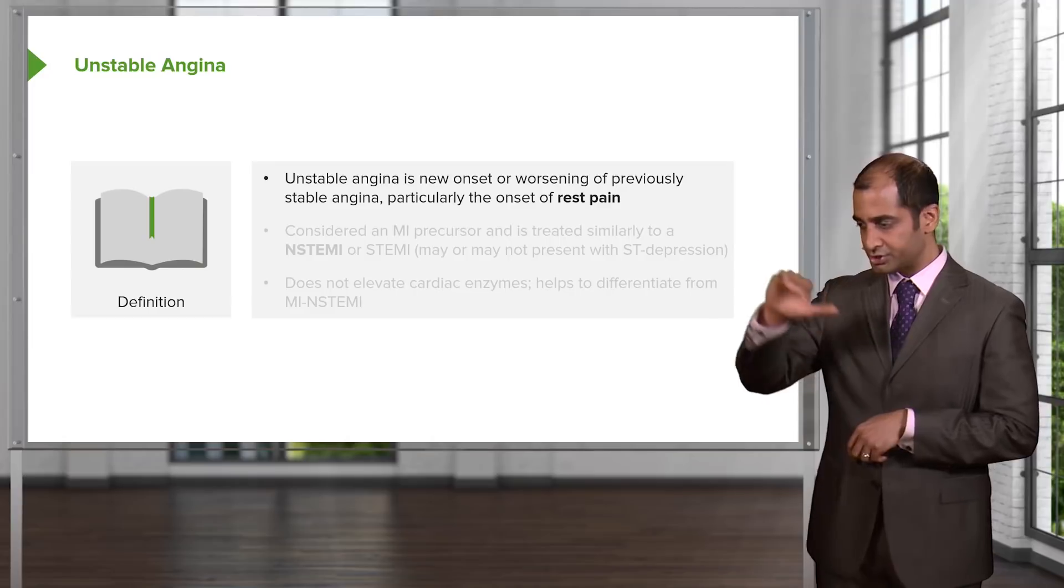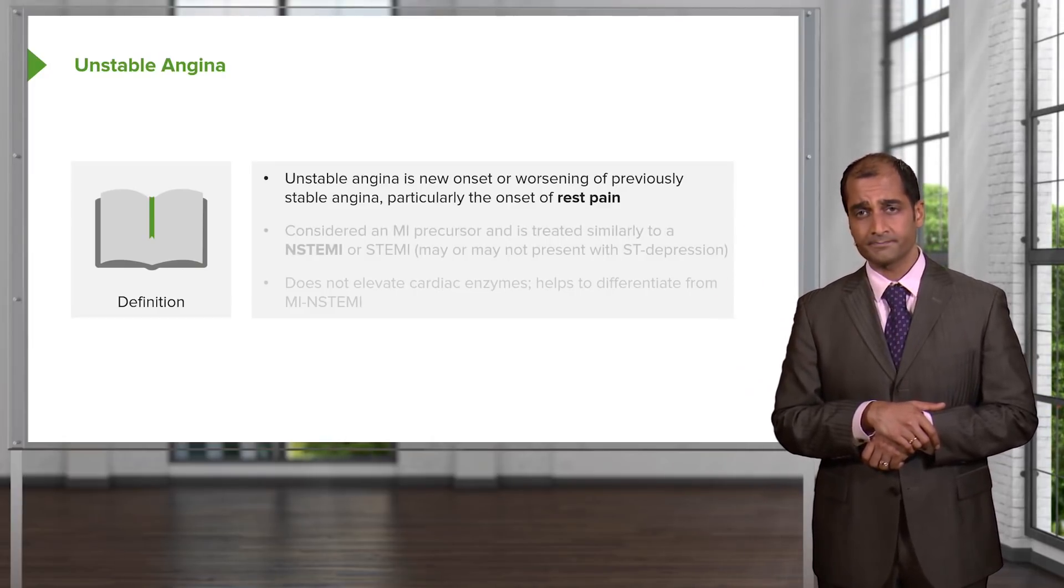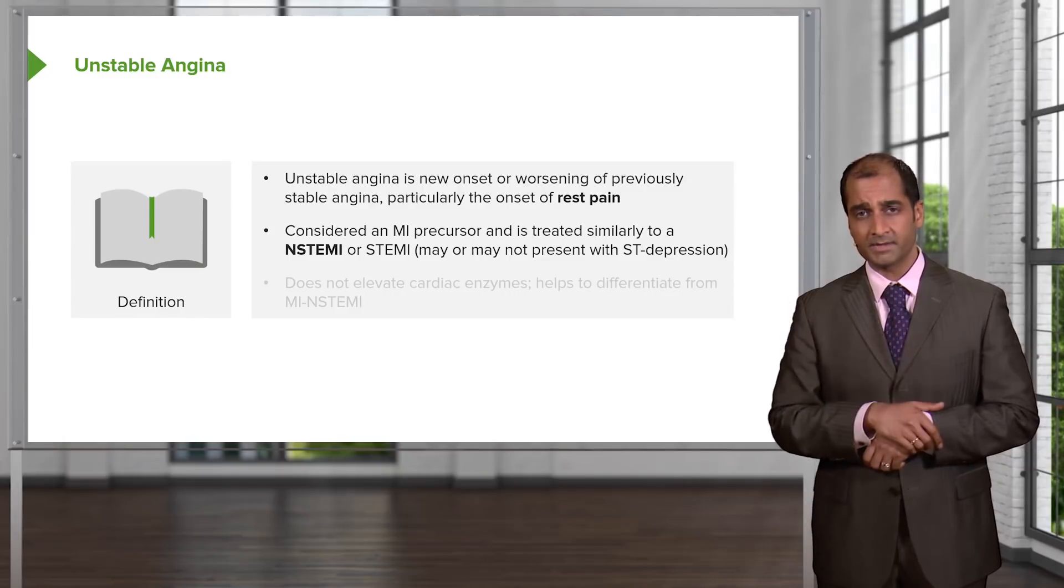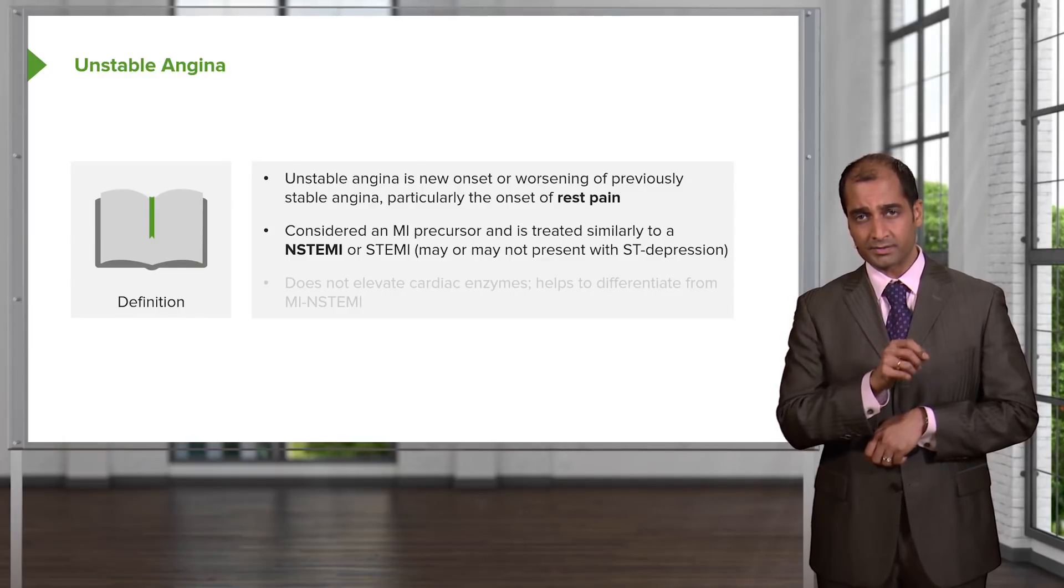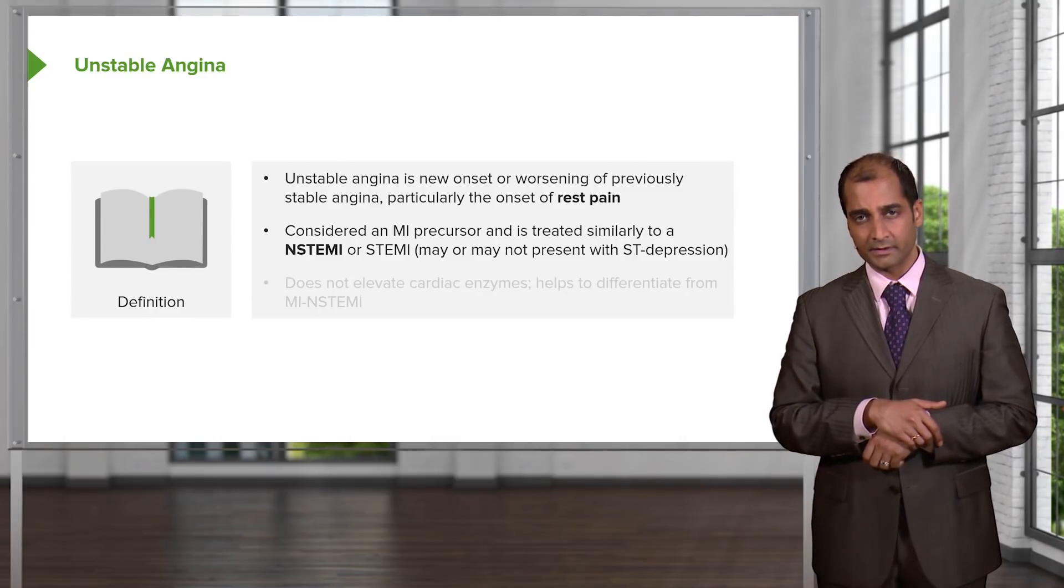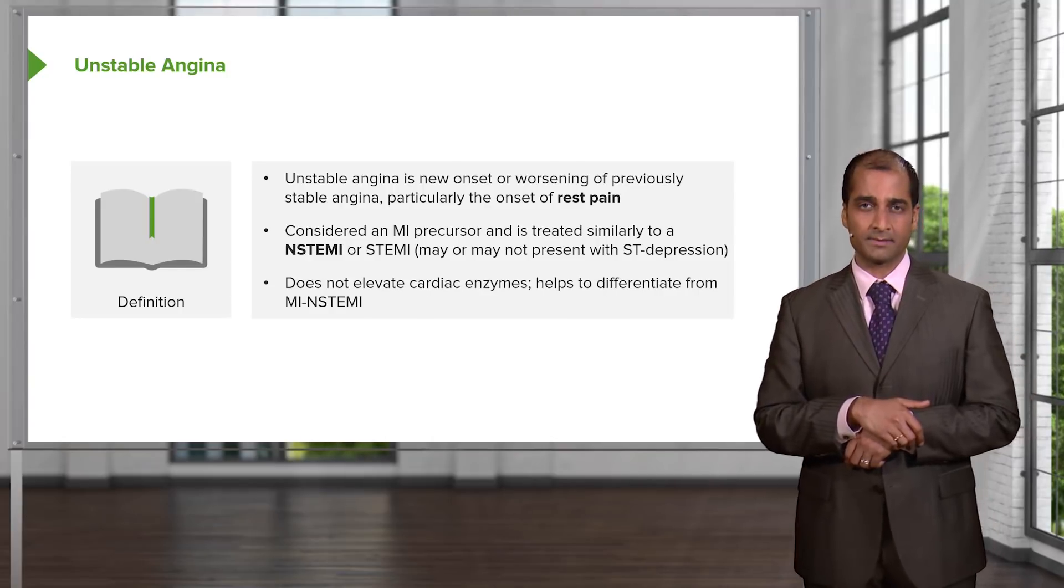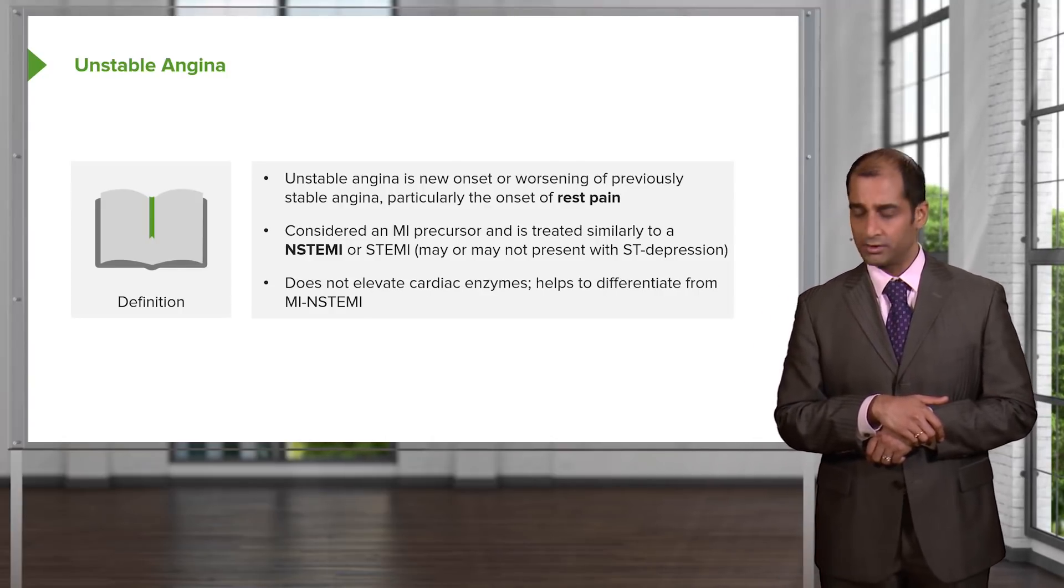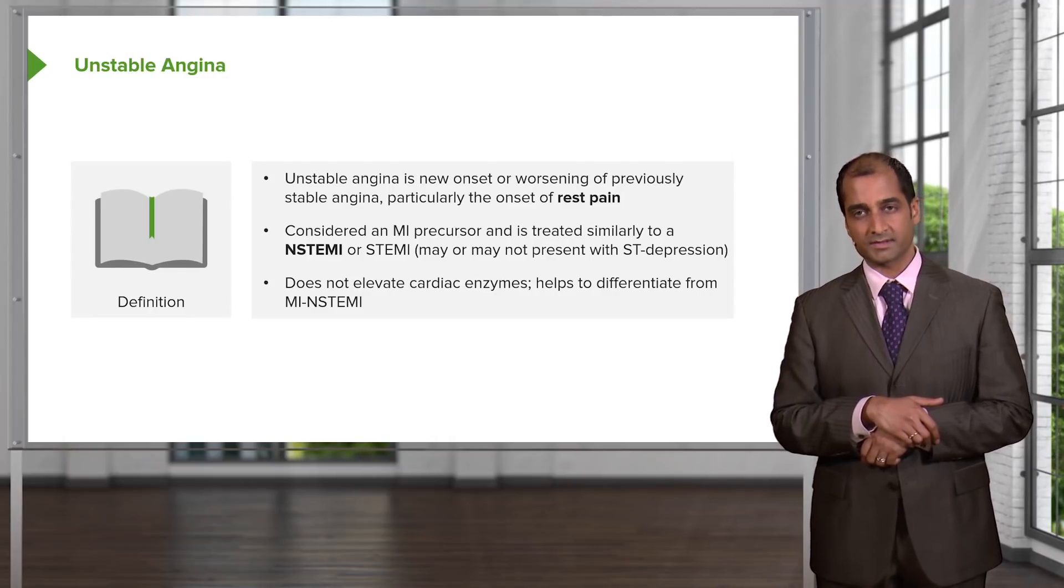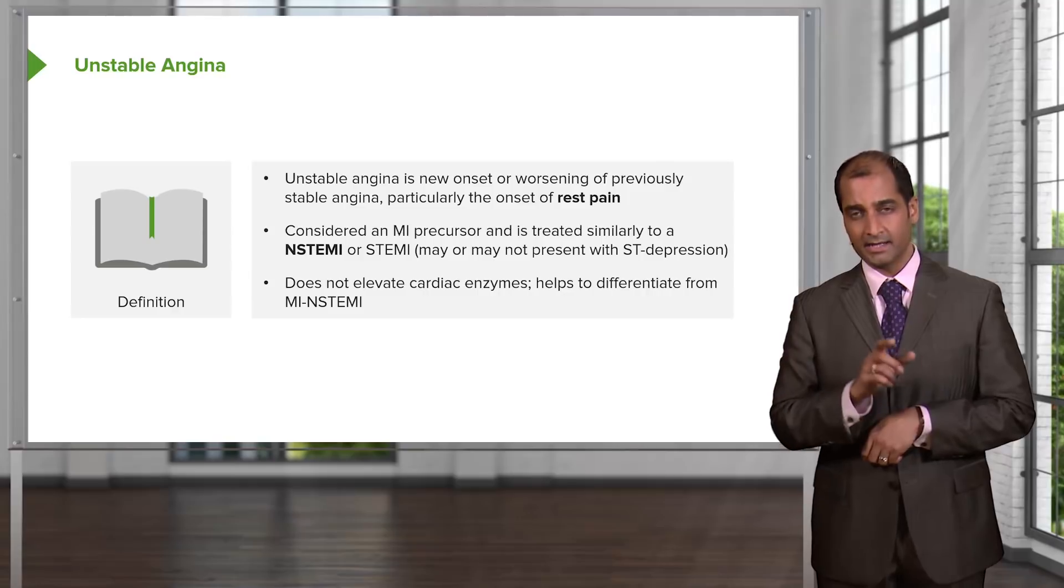We move from stable angina into unstable angina. What are we headed? Crescendo. Crescendo to myocardial infarction. Chest pain even at rest. Consider it the MI precursor. You're crescendoing towards an MI. You might find a non-STEMI, which means an ST depression. But will you find a cardiac enzyme to be elevated in unstable angina? No, you will not. What is the gold standard cardiac enzyme? Troponin I.